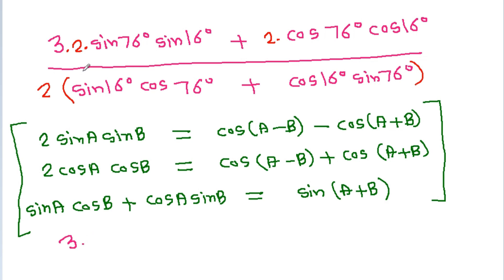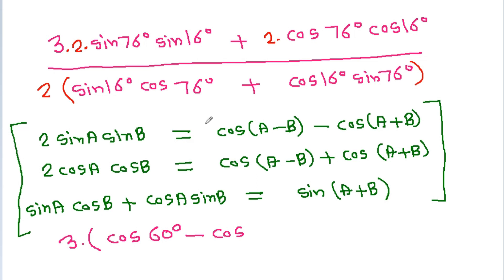So it is 3 times: 2 sin 76 degree sin 16 degree will be cos(76 minus 16) which is cos 60 degree, minus cos(76 plus 16) which is cos 92 degree, plus 2 cos 76 degree cos 16 degree, which gives cos 60 degree plus cos 92 degree.